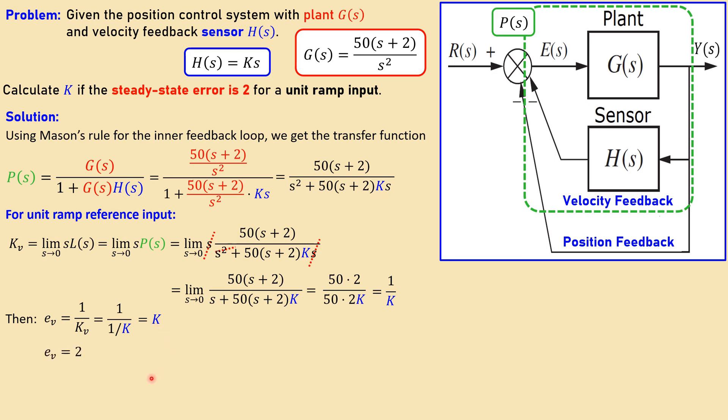Now that means actually the following: in order to have 2, which is then given in this problem, my value of K for my sensor must be also 2. So if this is 15, that will be 15. So this is actually a very simple expression. That is then for this situation.